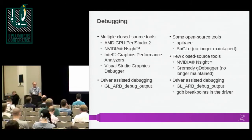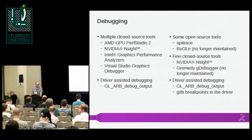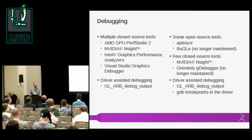There are also what I call driver-assisted debug tools, where an application can make calls directly into the driver or directly interact with the driver to get some debug feedback. This is through the ARB debug output extension, where the application registers a callback and when the driver thinks something has happened that the app should know about — like if one of their textures got disabled because it was incomplete, or their shader is broken — it tells them. Generally there's nothing standard cross-vendor about what kind of information actually comes back from this extension.